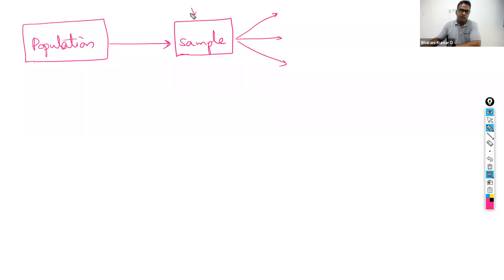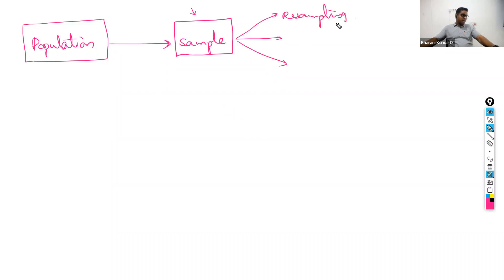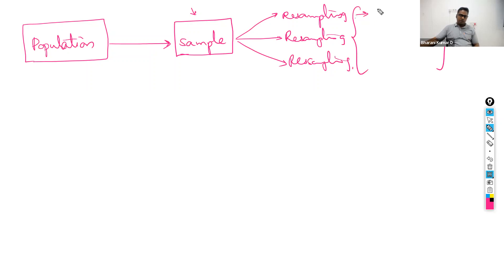Once you get the sample, you again take that sample and split the data into training and test. That process is called resampling. When you apply this resampling technique, you get sub-samples — from this sample, you're trying to get a smaller portion called a sub-sample, which you can think of as your training datasets on which you train your models.